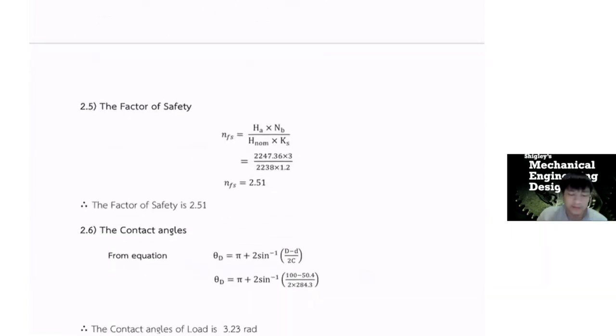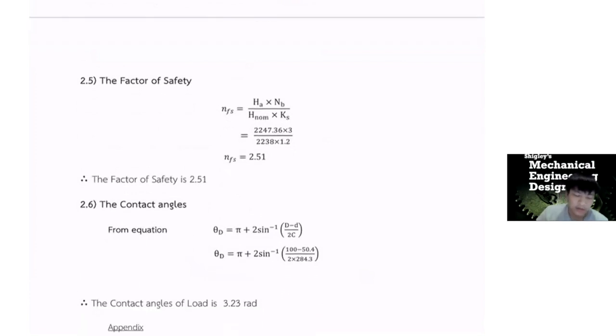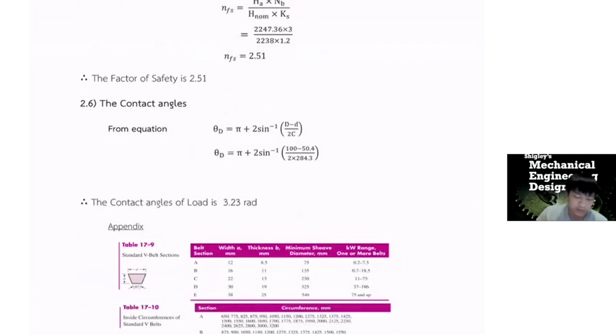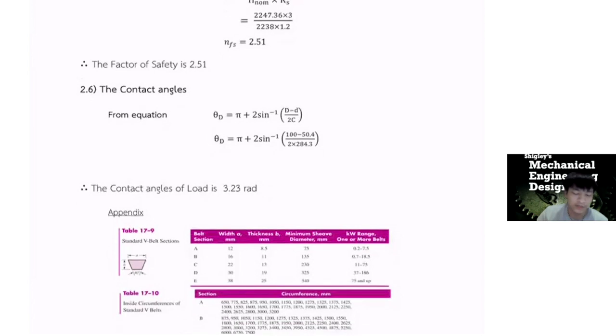And now factor of safety is the 2.51. You can see factor of safety more than factor of safety design. And we can use this belt for the safety. The contact angle from equation, we can find the contact angle of the load is the 3.2 T gradient for the angle of load.